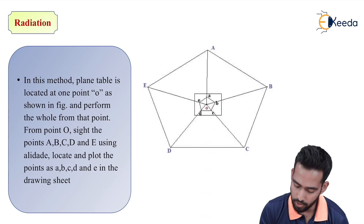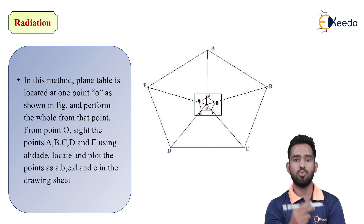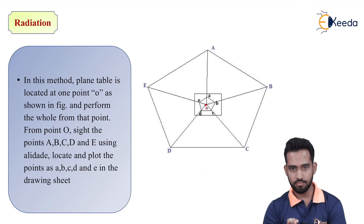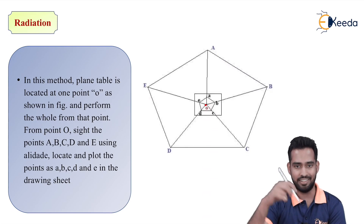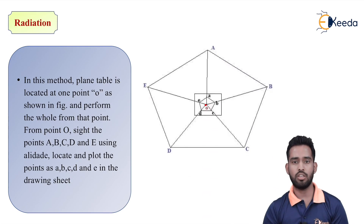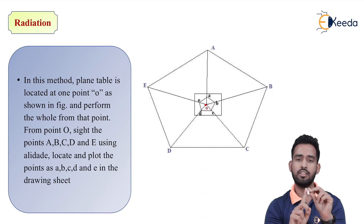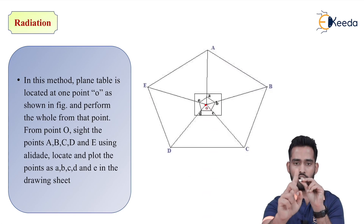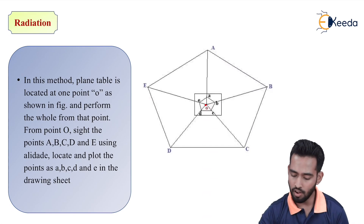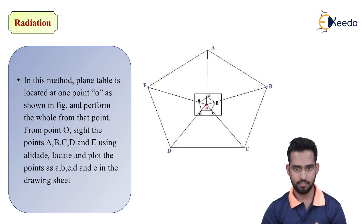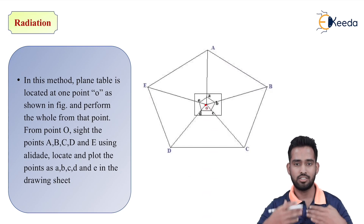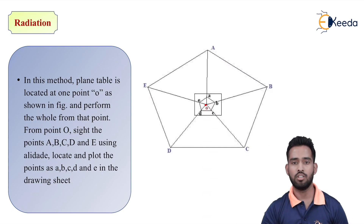After marking point O, now use your alidade. By setting the ranging rod at each station, draw a ray towards it using the sharp edge of the alidade. Keep your alidade coinciding with station point O and draw a ray towards each object. After drawing the rays, the next step is to calculate the distance between station point O and the actual object on the ground.